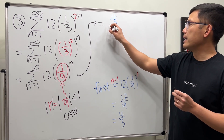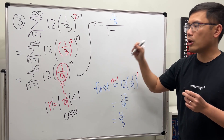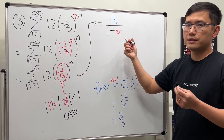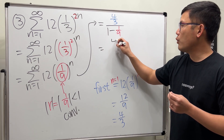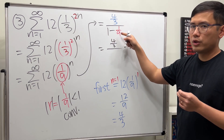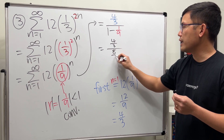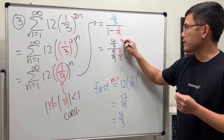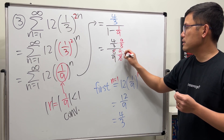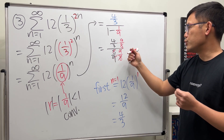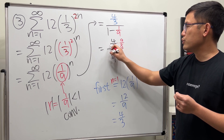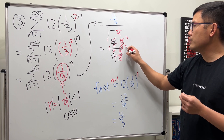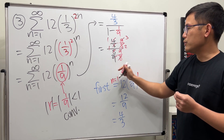We divide the first term by one minus the common ratio, which is one over nine. So we have four over three divided by one minus one over nine. The denominator is eight over nine. Multiplying by the reciprocal, we cancel and reduce: three goes into nine three times, four goes into eight two times, and altogether we get three over two. That is the answer to number three.